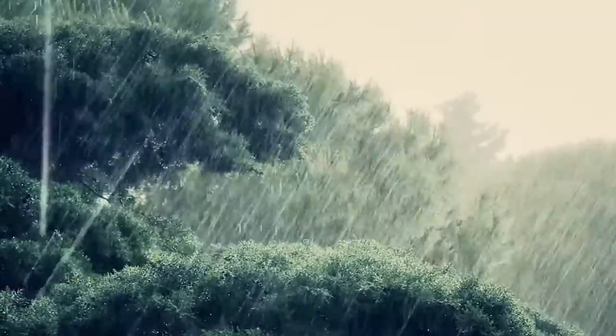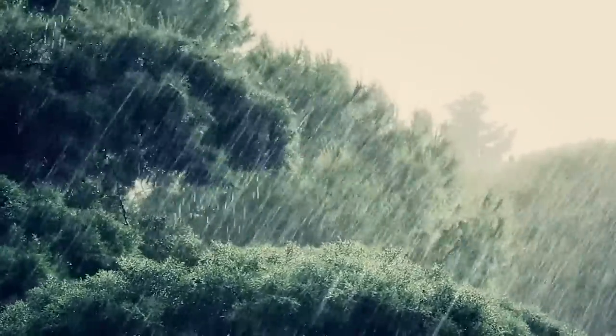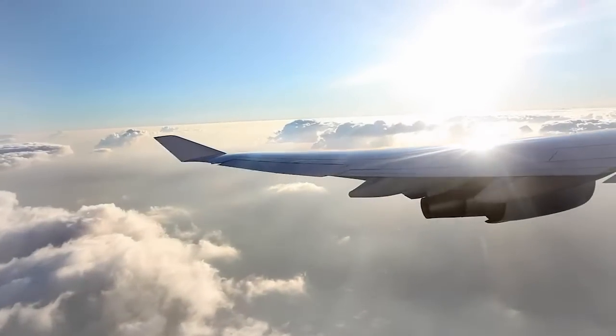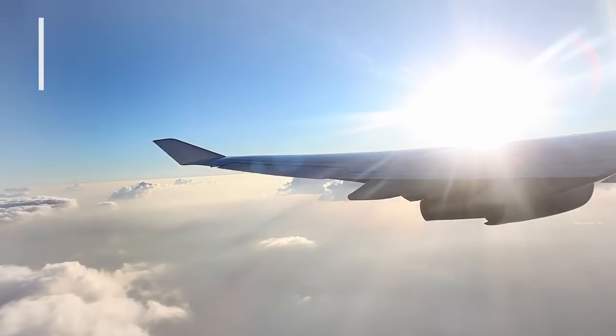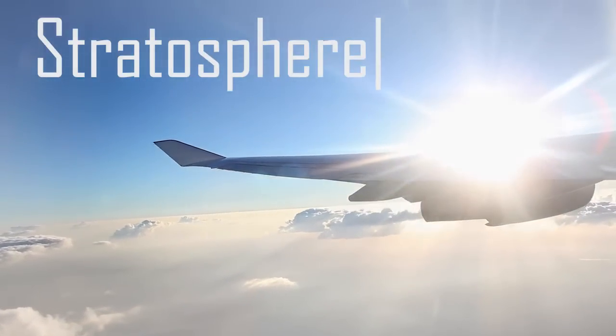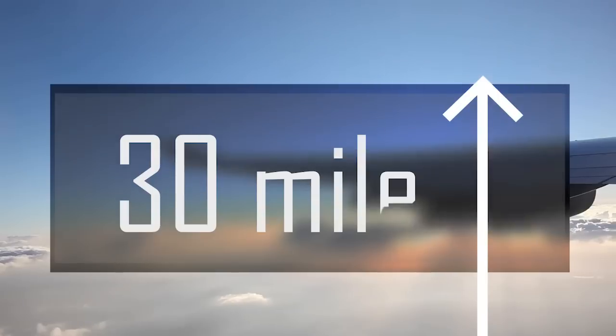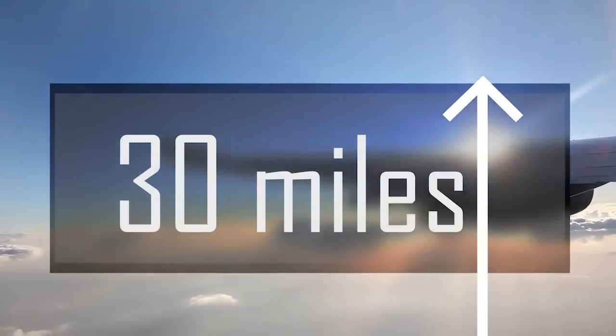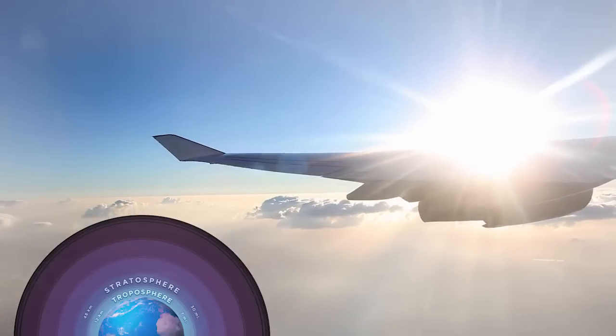The next layer that begins at the top of the troposphere is the stratosphere. The stratosphere stretches for about 30 miles outward into space. This layer is the maximum height at which jets can fly.